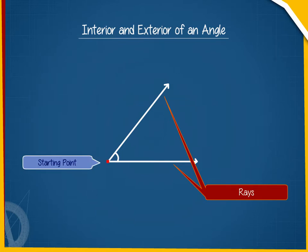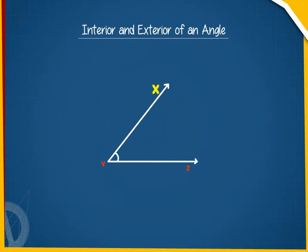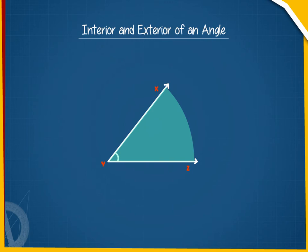We have an angle XYZ where Y is the vertex of the angle. Shade the portion that lies between the two arms. The shaded portion is known as the interior of an angle.